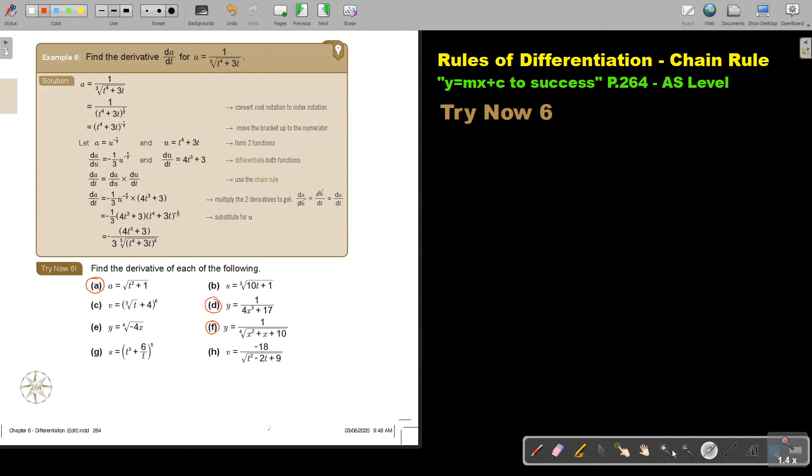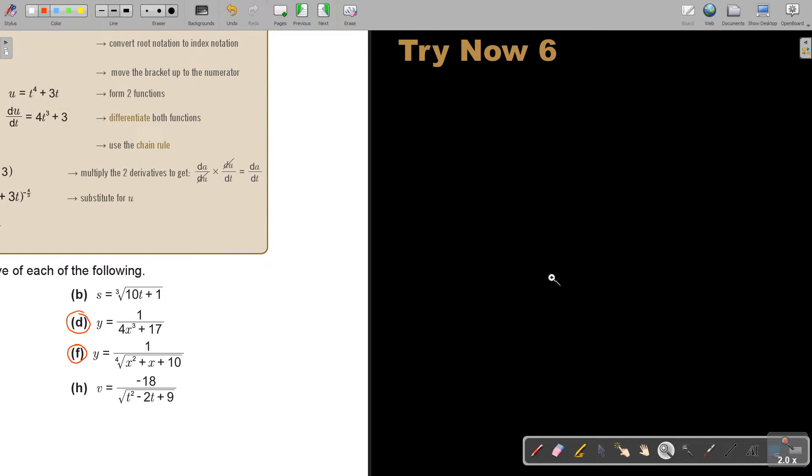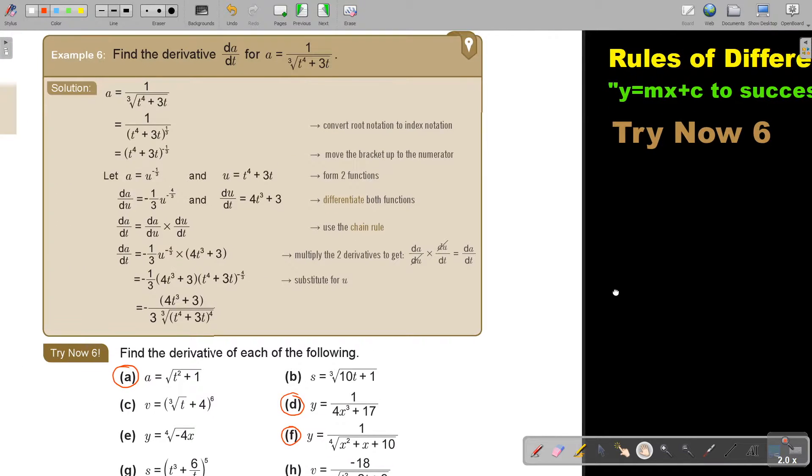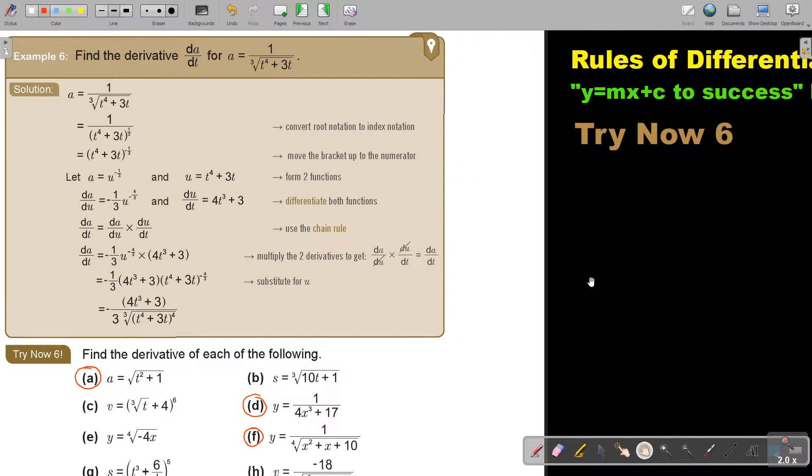A equals 1 over the cube root of t to the power of 4 plus 3t. Let's look at the example. In this example the first thing I don't like roots and I don't like the variables to be in the denominator. So I must get rid of the roots and I must take this to the numerator.